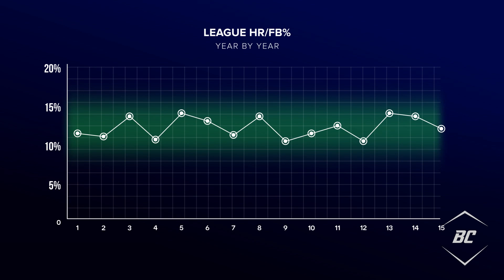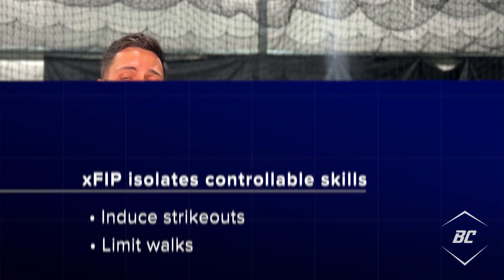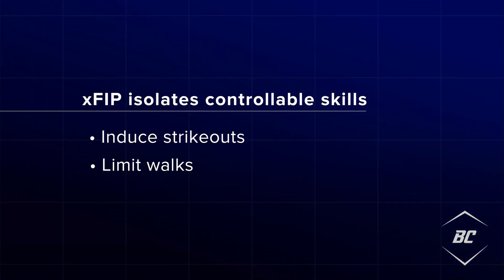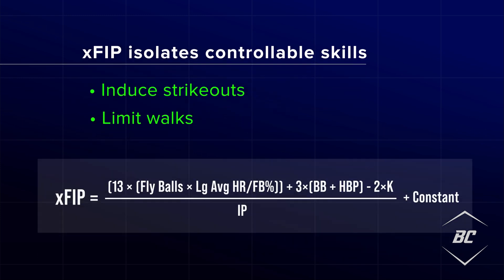But as far as individual pitchers are concerned, this number can vary greatly. By using the league average home run per fly ball percentage in its calculation, it makes sense to remove the variability and further isolate the skills that pitchers have the most control over — their ability to get strikeouts and limit walks. XFIP is represented by the following equation.